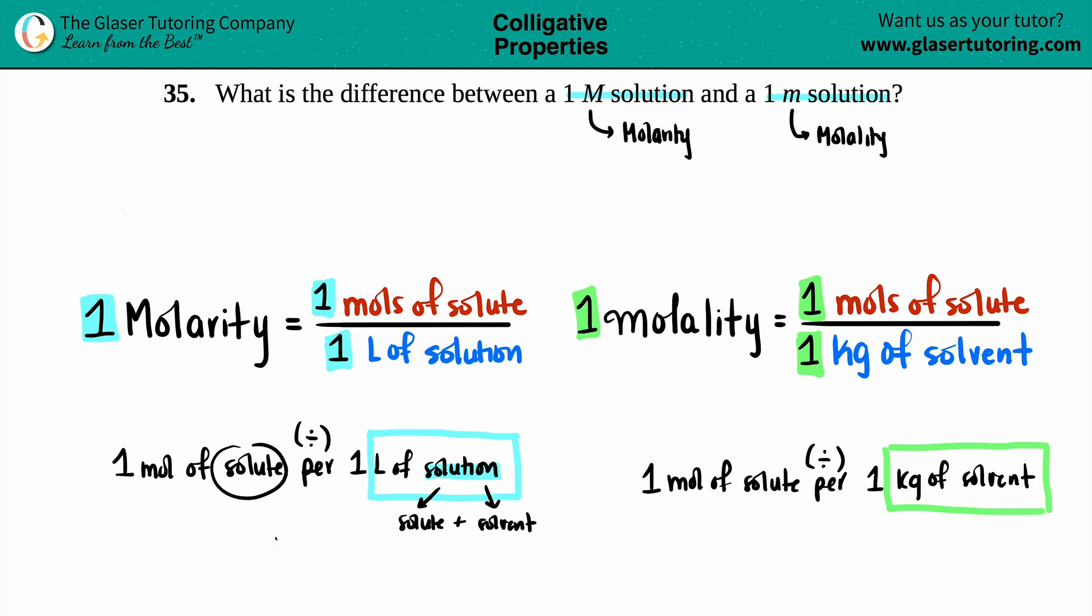The molarity, on the other hand, talks about how much of the small substance you have per your entire solution. So that is the difference. They only wanted the difference. The similarities would be that you're still talking about moles of solute. So that's the same. But the difference here is that the denominator, liters of whole entire solution versus just kilograms of a solvent, is different. And that is the answer to this question.